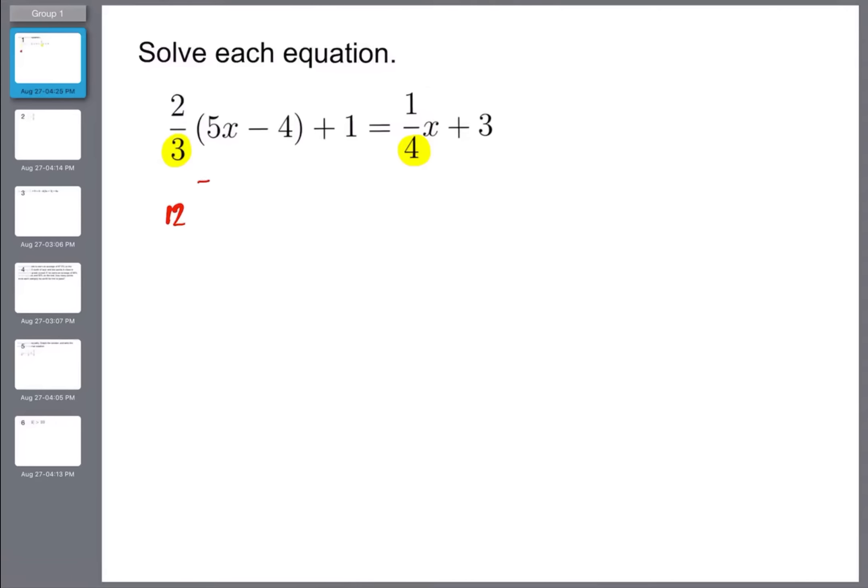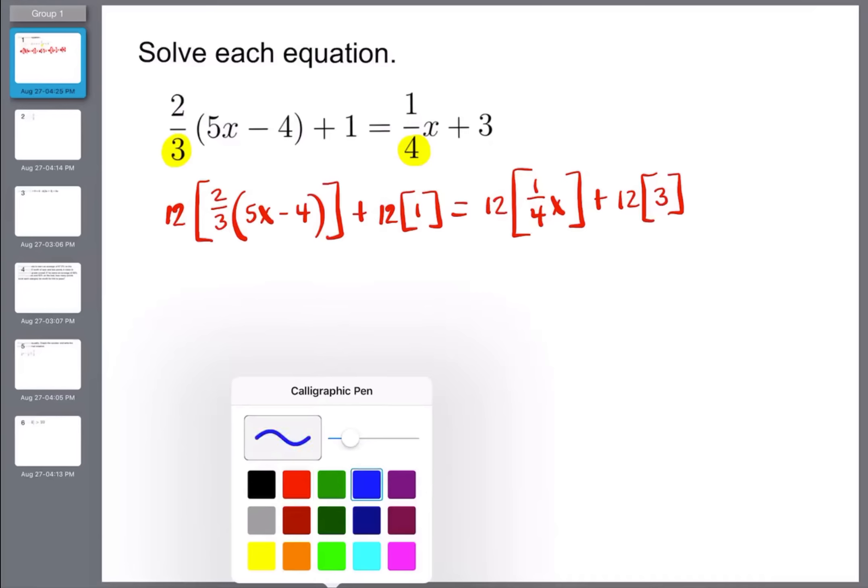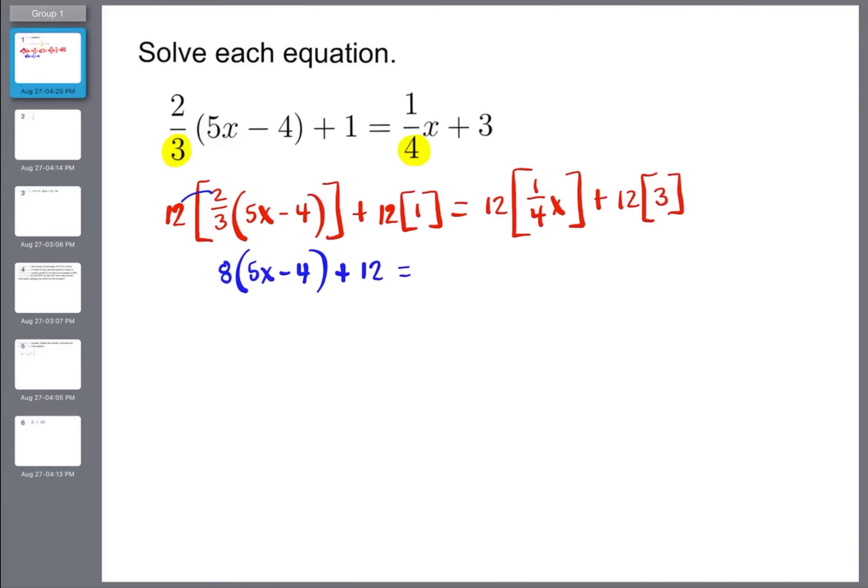So we're going to do 12 times two thirds of five x minus four plus one, and then equals 12 times one fourth x plus 12 times three. And then from here, remember when you multiply, you're going to multiply the 12 by the top of the fraction and divide by what's on the bottom. So 12 times two is 24. When we put 24 over three, that gives us eight times five x minus four. On this side, 12 times one is 12. Putting that over four gives us back three x and then 12 times three is 36. So now we have something much more comfortable solving compared to what we had initially up here. And it took just one line of work to get there.